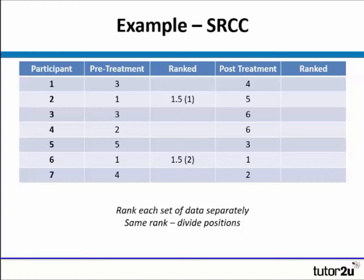For Spearman's rank, each set of data needs to be ranked separately. We have a pre-treatment group and a post-treatment group. To rank the data, you simply look at the score for each group and rank it within itself. For example, if two people both scored one, they can't both have a rank of one — they take positions one and two, so they both take the middle position, which would be 1.5.